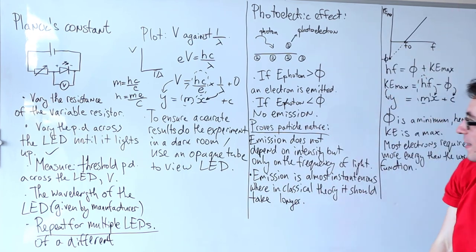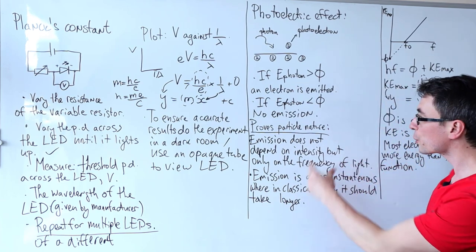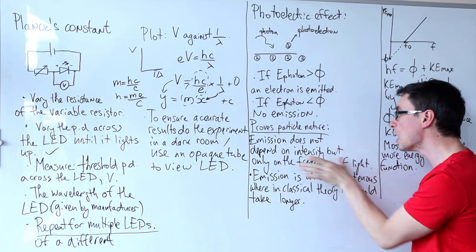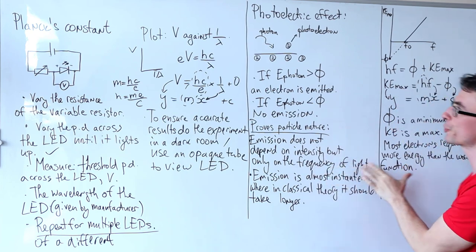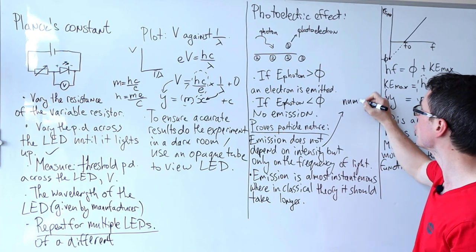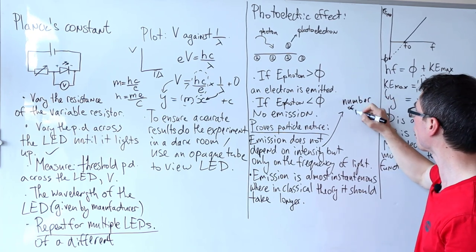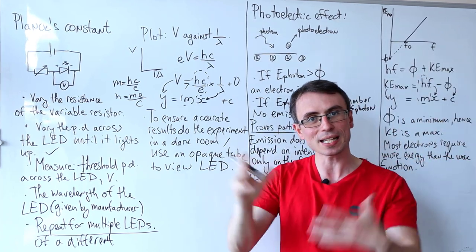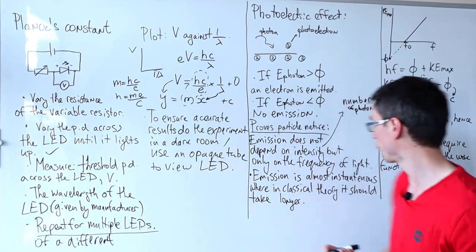How does the photoelectric effect prove the particle nature of light? How does it prove that this here is a particle? First of all, the emission does not depend on the intensity but only on the frequency of the light. Now intensity is simply the number of photons. If the light is very intense, that means there's going to be more photons.